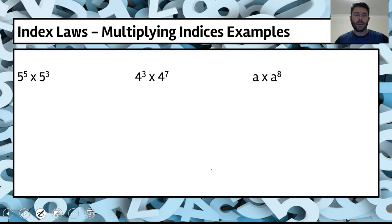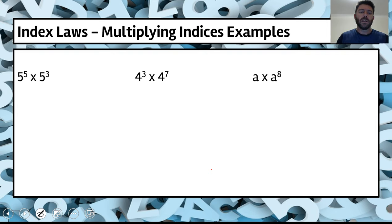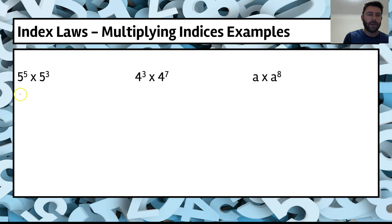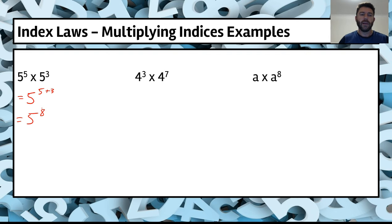Let's do some examples. 5 to the power of 5 times 5 to the power of 3. We've proved the law with those earlier examples. So 5 to the power of 5 times 5 to the power of 3 equals 5 to the power of 5 plus 3, which equals 5 to the power of 8. Next, 4 to the power of 3 times 4 to the power of 7 equals 4 to the power of 3 plus 7, which equals 4 to the power of 10.